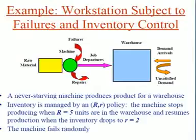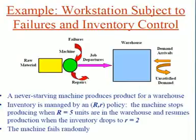One job must reside at the machine whenever its status is busy or down. The state is a pair of variables v(t) and k(t), where v(t) is the status of the machine — idle, busy, or down — and k(t) is the finished product level in the warehouse, all at time t.